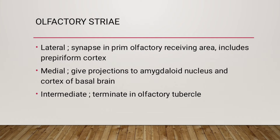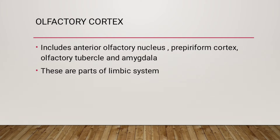The lateral olfactory stria synapses in the primary olfactory receiving area, which includes the pre-piriform cortex. The medial stria gives projections to the amygdaloid nucleus and cortex of the basal brain. The intermediate stria terminates in the olfactory tubercle. The olfactory cortex includes the anterior olfactory nucleus, pyriform cortex, olfactory tubercle, and amygdala — all parts of the limbic system.